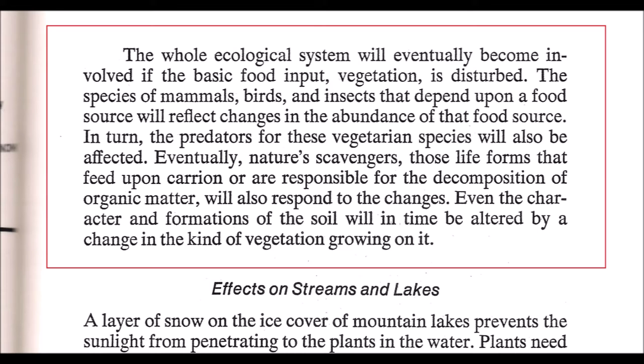In turn, the predators for these vegetarian species will also be affected. Eventually, nature's scavengers — those life forms that feed upon carrion or are responsible for the decomposition of organic matter — will also respond to the changes. Even the character and formations of the soil will in time be altered by a change in the kind of vegetation growing on it. So they don't know the long-term effects, but going by what's proposed to happen and what it will do, you can predict what changes might occur.